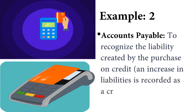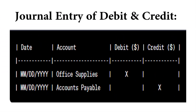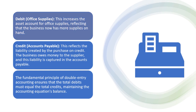In the journal entry for debit and credit: debit office supplies — this increases the asset account for office supplies, reflecting that the business now has more supplies on hand. Credit accounts payable — this reflects the liability created by the purchase on credit. The business owes money to the suppliers, and this liability is captured in the accounts payable.